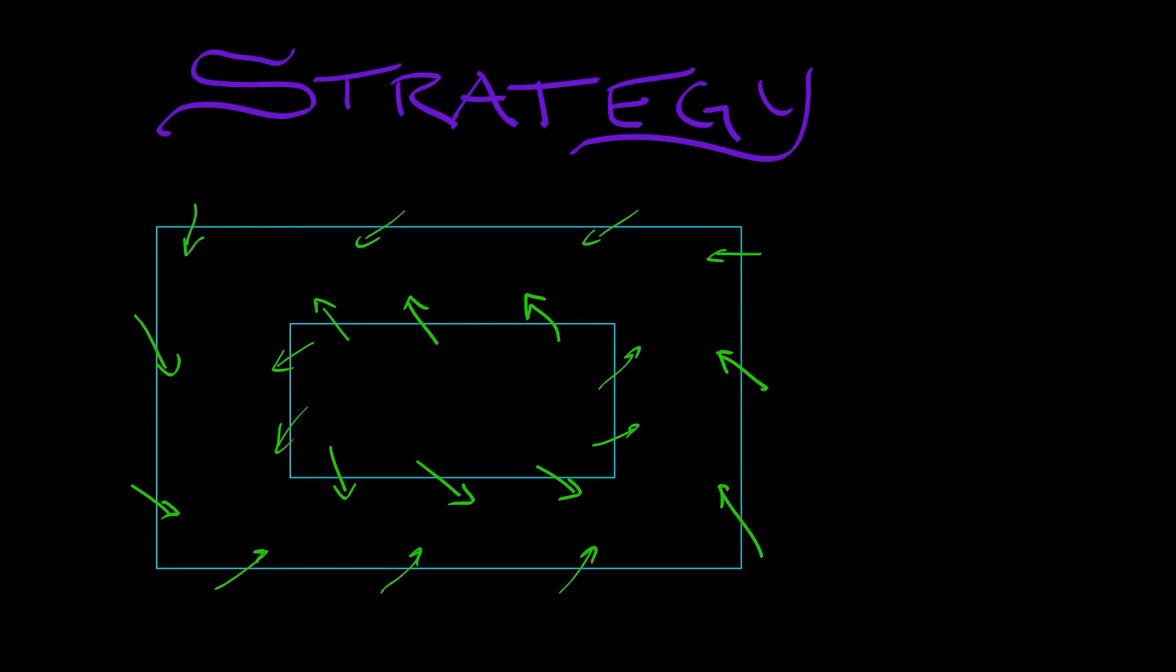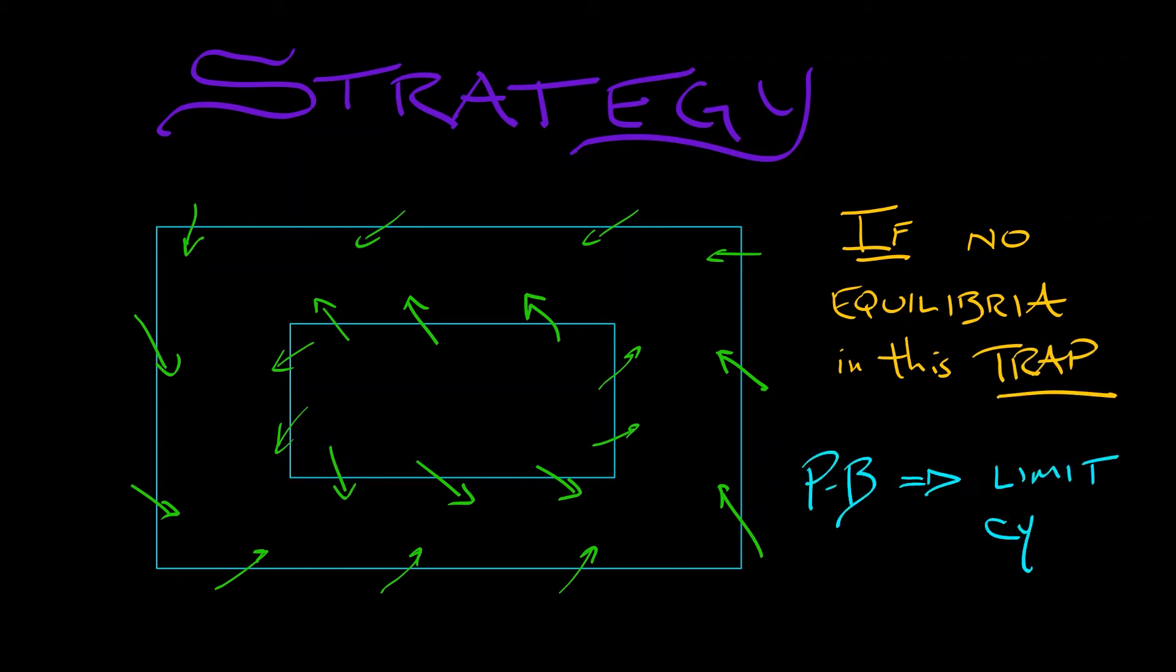If there are no equilibria inside of here, and if whenever you cross the boundary you're stuck in here forever and ever, then Poincaré-Bendixson says you've got to have a limit cycle in there.